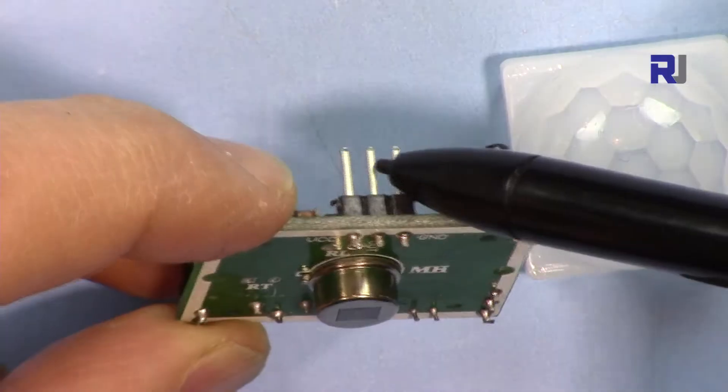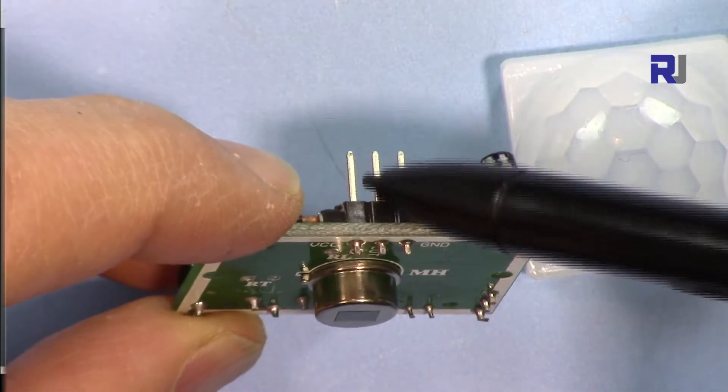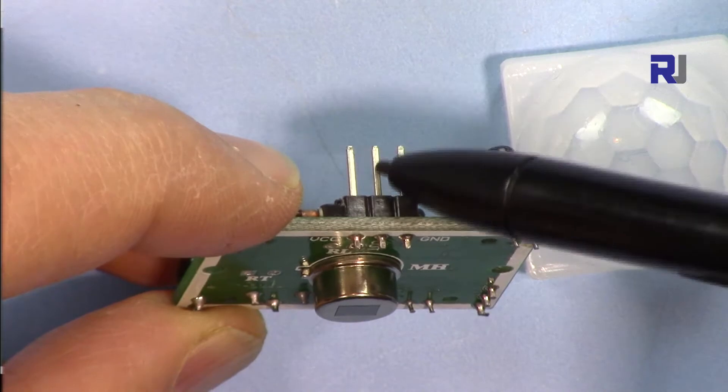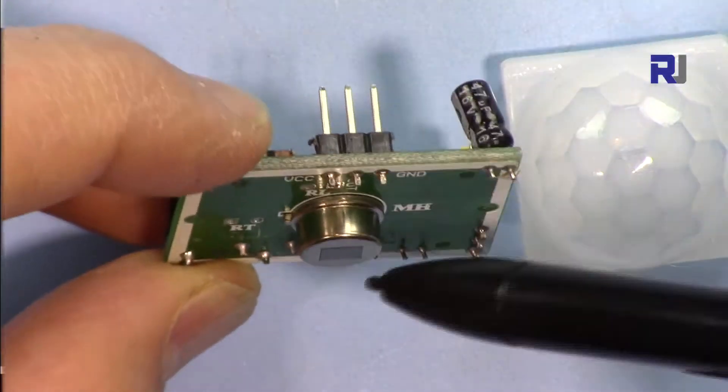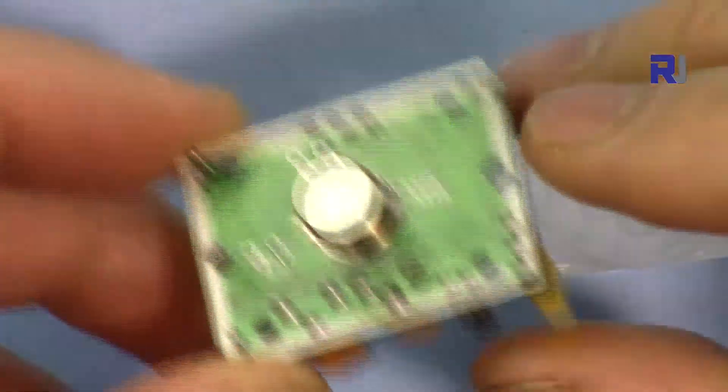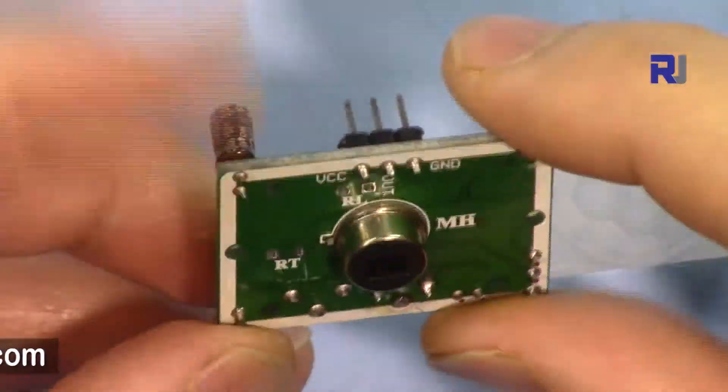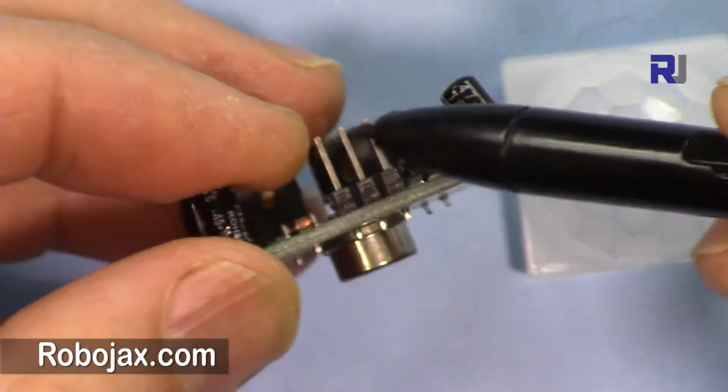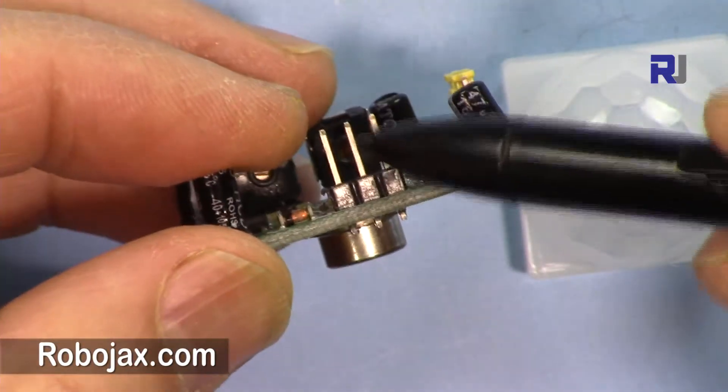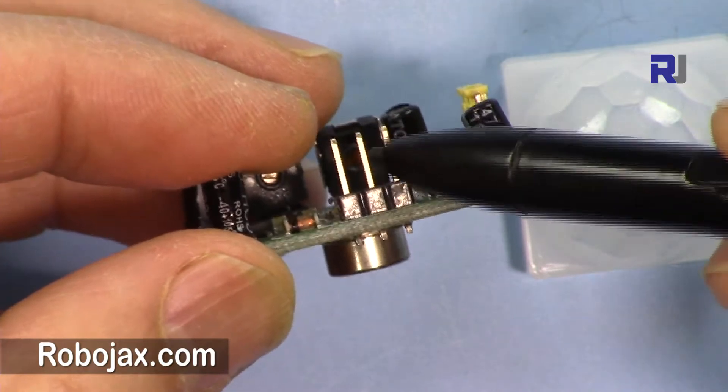It sends zero when there is no detection, so you don't need an Arduino. Without Arduino it can be used. You just need to supply a battery and then connect this to a buzzer or to something based on your application.